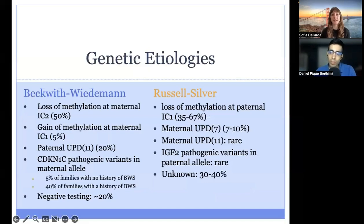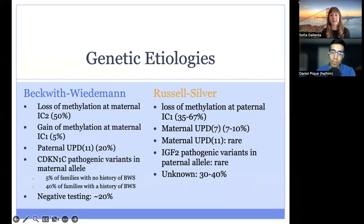We just introduced the most common genetic etiology for each of these two conditions, but here are some other common etiologies for both Beckwith-Wiedemann and Russell-Silver. UPD, or uniparental disomy, accounts for the second most common cause of both conditions. For Russell-Silver syndrome, we also list maternal UPD of chromosome 7, even though the Beckwith critical region we've been discussing is on chromosome 11. There is a second imprinted region on chromosome 7 which involves paternally expressed genes important for growth, so maternal UPD of chromosome 7 would also result in loss of that gene expression and result in Russell-Silver syndrome.